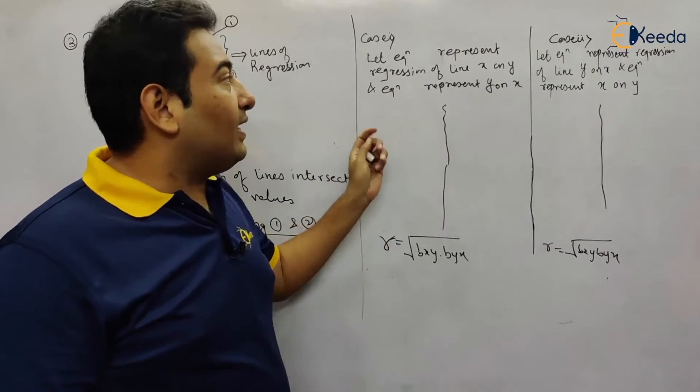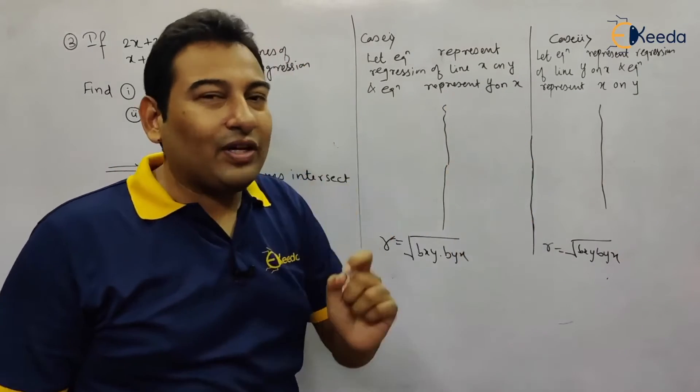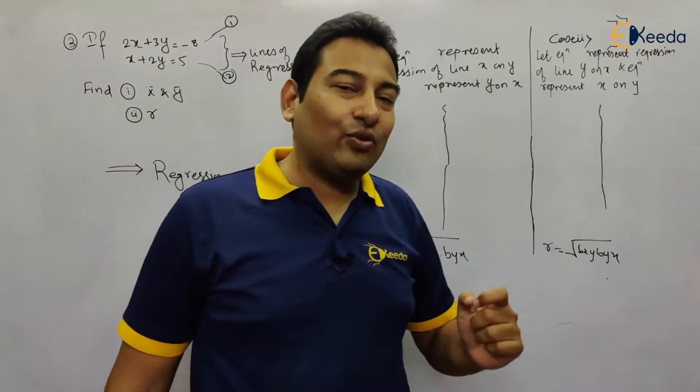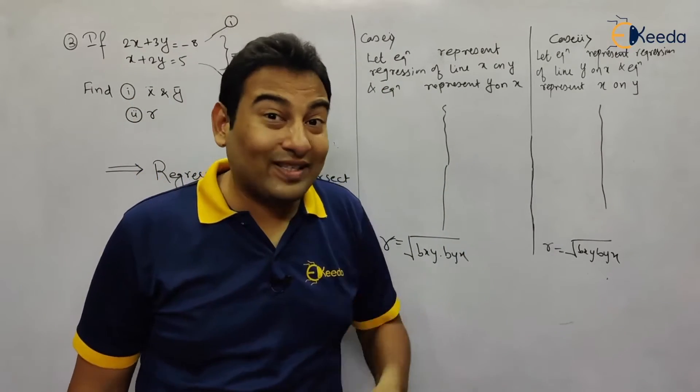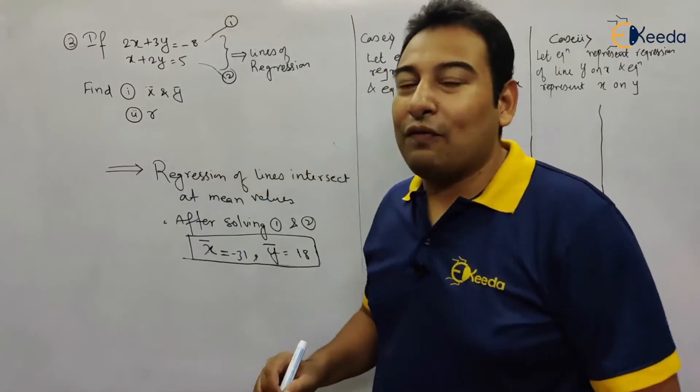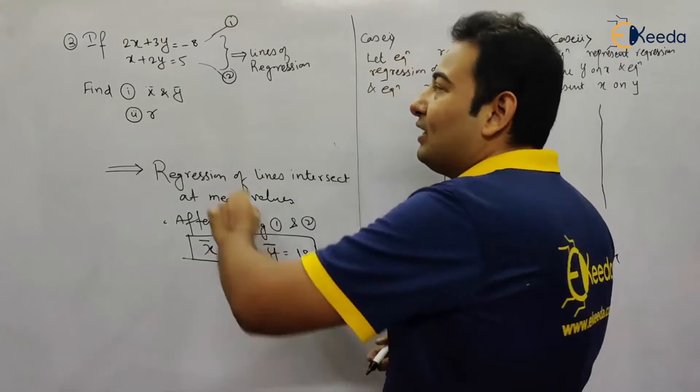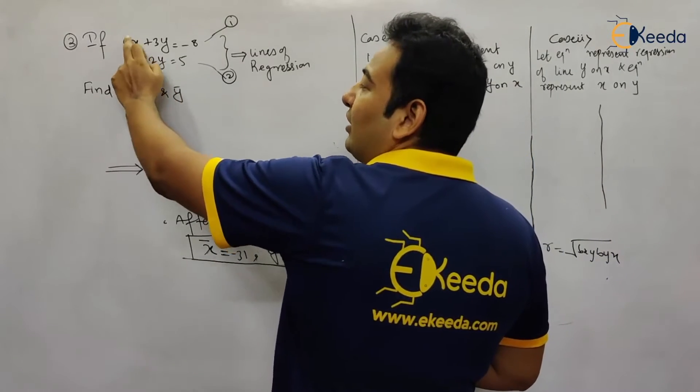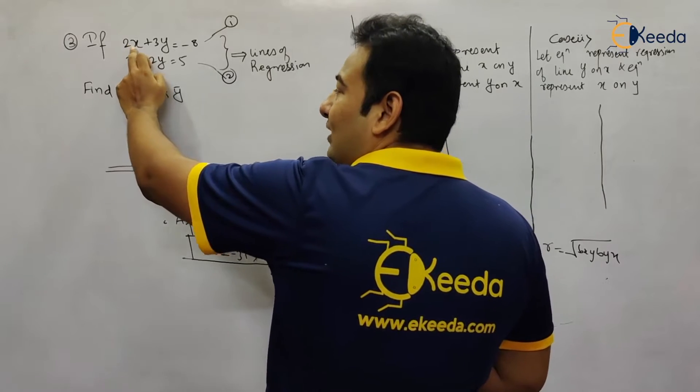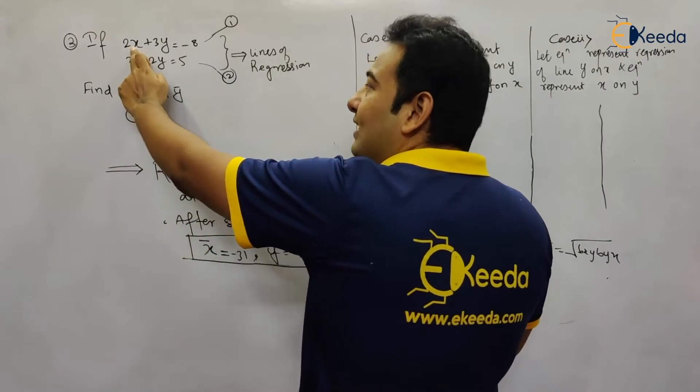Let's move on. There will be two cases, and I have a trick where you'll get your result in the first case only. What is the trick? A larger coefficient of x represents regression of line x on y.